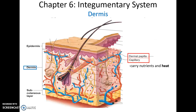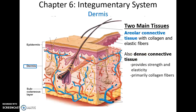Within the dermal papillae you will also find many blood capillaries near the interface between the dermis and the epidermis, which can provide nutrients for the epidermis, remove waste, and carry heat to the surface of the skin so that heat can be lost. The dermis is made up of two main types of connective tissue: areolar connective tissue, which includes collagen and elastic fibers, and dense connective tissue, which has many collagen fibers and some elastic fibers, giving the dermis strength and elasticity so the skin can resist forces without tearing.